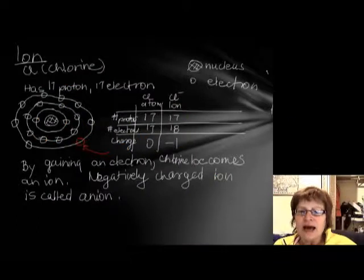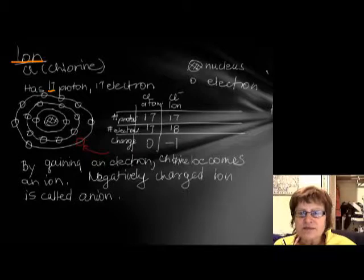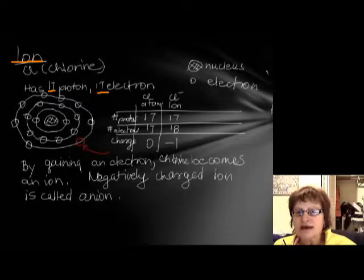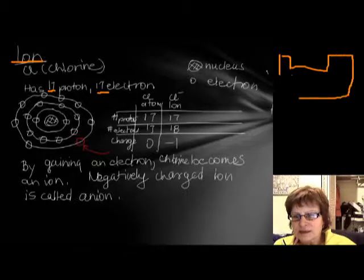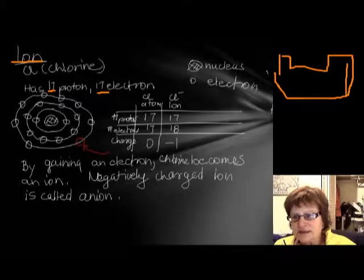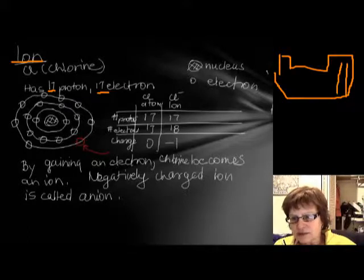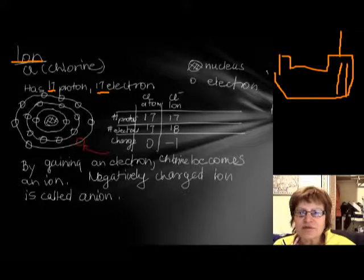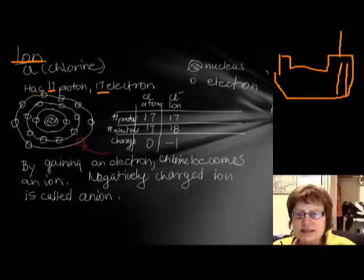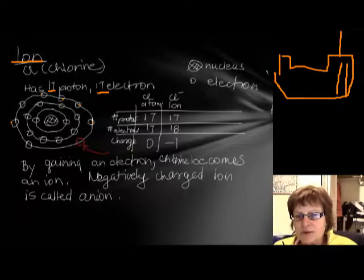If we look at chlorine, it has 17 protons and 17 electrons. Chlorine is in row 17, right next to the noble gases. It has seven valence electrons, so it needs one more to have eight.